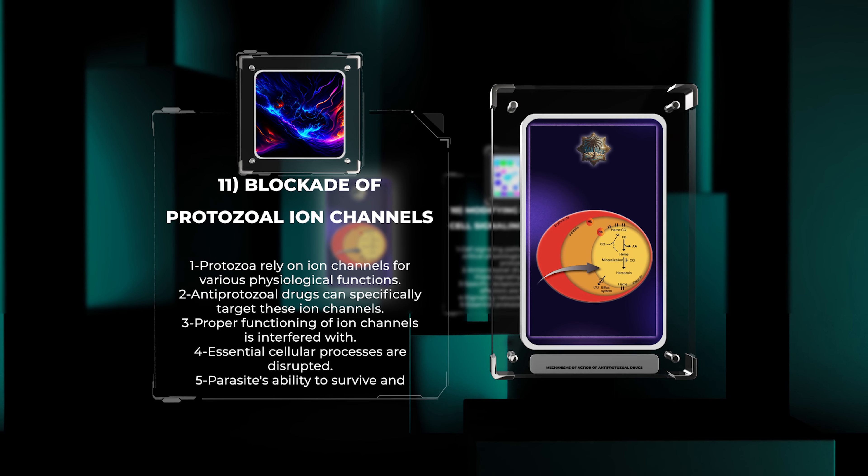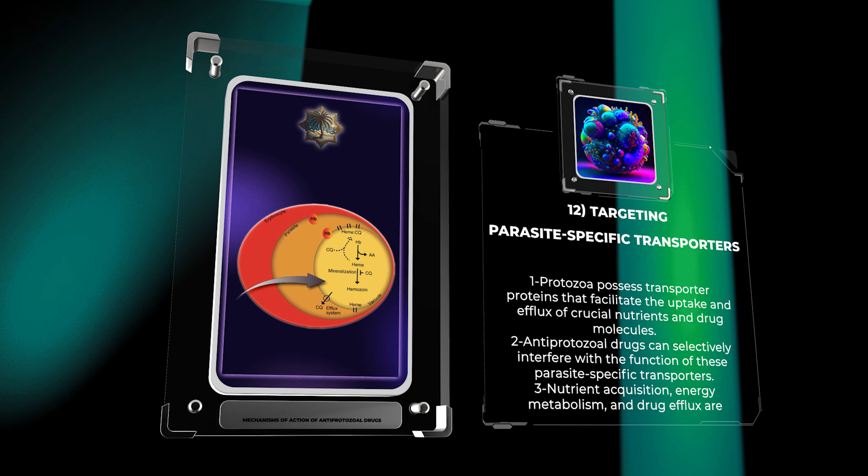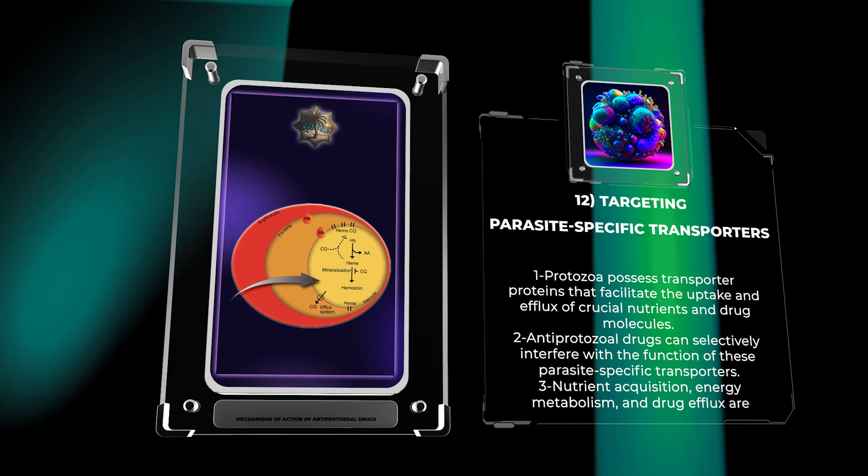These effects significantly compromise the parasite's ability to survive and propagate. Protozoa possess transporter proteins that facilitate the uptake and efflux of crucial nutrients, metabolic intermediates, and drug molecules. Antiprotozoal drugs can exploit these parasite-specific transporters by selectively interfering with their function. By hijacking or blocking these transporters, the drugs disrupt essential nutrient acquisition, energy metabolism, and drug efflux mechanisms, ultimately leading to parasite death.